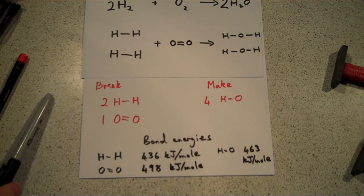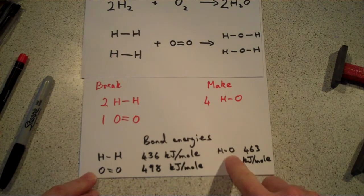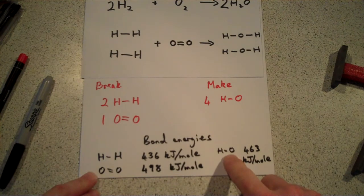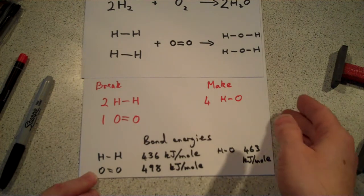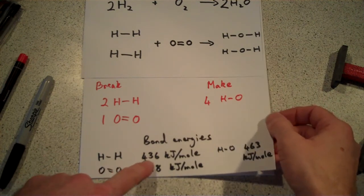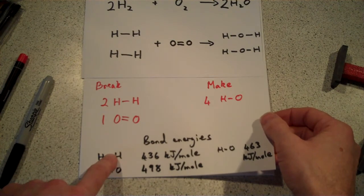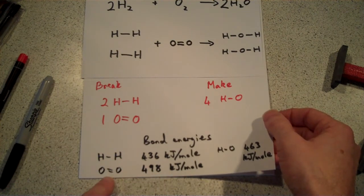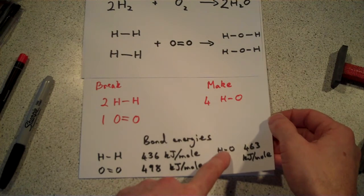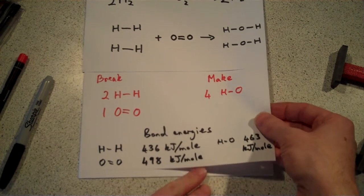Well, the H-H bond takes 436 kilojoules per mole of bonds to break. The oxygen double bond takes 498 kilojoules to break. And the O-H or H-O bond takes 463 kilojoules to break a mole of it. But, we're not breaking a mole of that. We're making a mole of that. So, that energy is going to be coming out rather than going in. That energy has been going in because we're breaking H-H bonds. That energy is going to go in, endothermic, because we're breaking those bonds. We're making those bonds, so we're going to get that energy out.